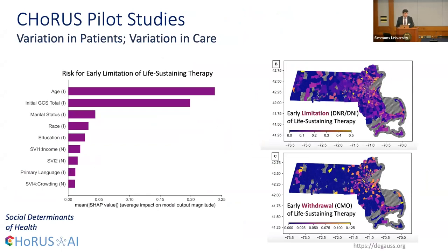One pilot study looks at a map of Massachusetts and the neighborhoods from which people come to our hospital, and the likelihood that they will either limit or withdraw care — what we call a DNR, DNI order, or comfort measure only care. Where it's dark you'll see low rates of withdrawal care, and where it's bright, high rates. The top eight or nine factors are structural or social determinants of health.